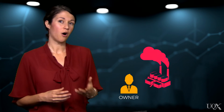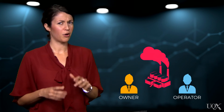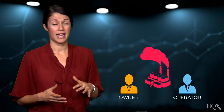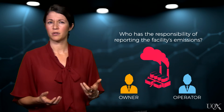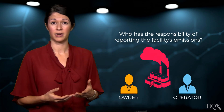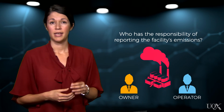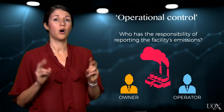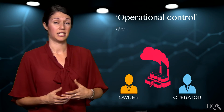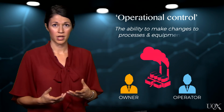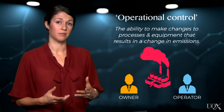Sounds simple, right? Well, it can get a bit more complicated. Suppose that power plant is owned by your organisation but operated by another. You don't want both organisations to carbon footprint the power plant, as this would mean emissions are double counted. So who has the responsibility of ensuring the emissions from the power plant are accounted for? This will be the organisation with the overall operational control — that is, the organisation that has the ability to make changes to processes and equipment that results in an increase or decrease in emissions.